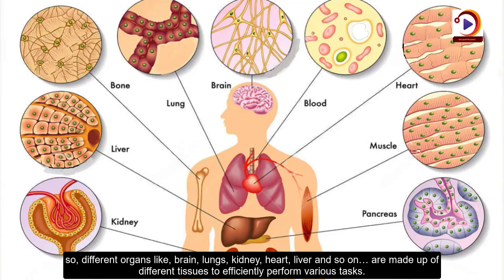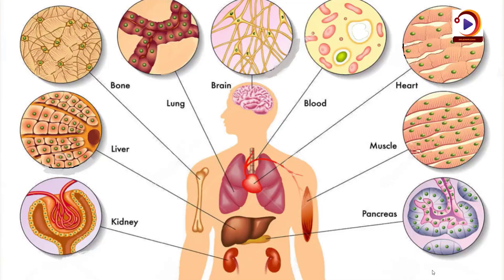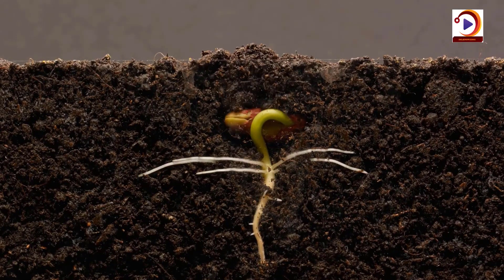Different organs like the brain, lung, kidney, heart, liver and so on are made up of different tissues to efficiently perform different tasks.